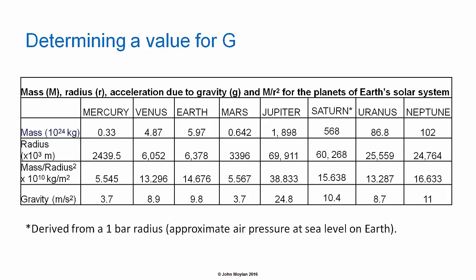Here we have the table of values for you to plot. The planets are arranged across the top with mass, radius, mass on radius squared, and gravity going downwards. Mass is in units of 10²⁴ kilograms, radius is in units of 10³ meters (so in kilometers), mass on radius squared is in 10¹⁰ kilograms per meter squared, and gravity is in meters per second squared.